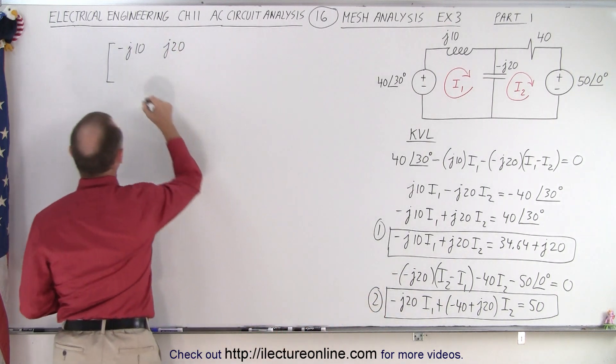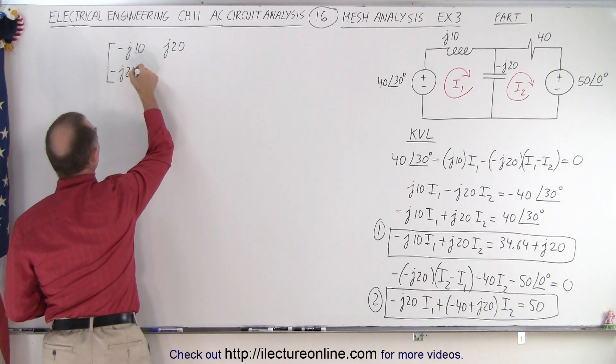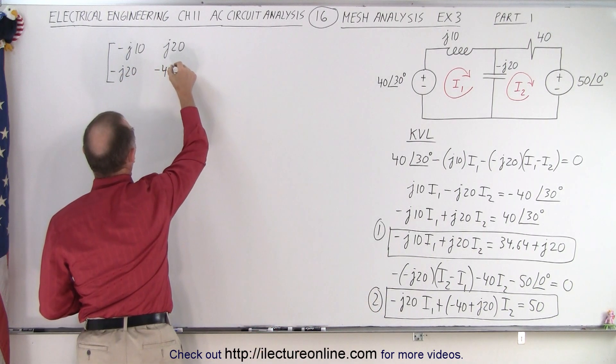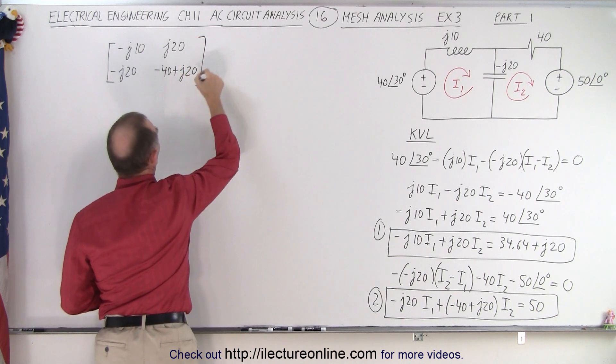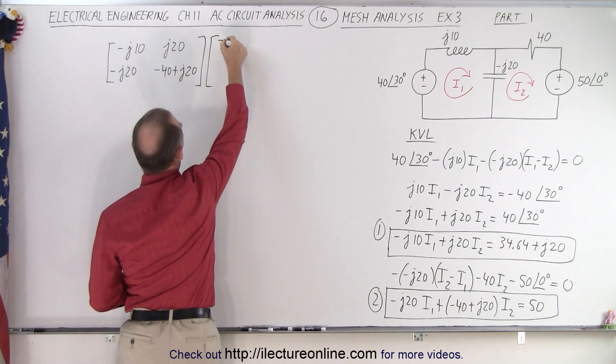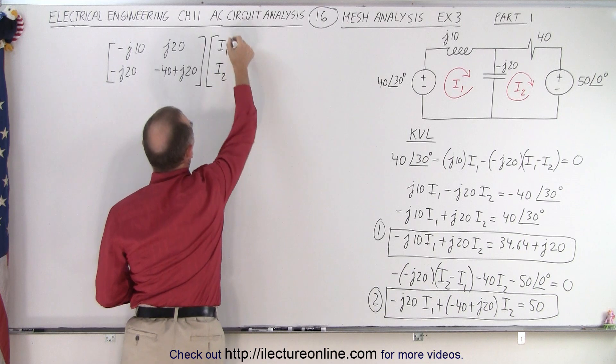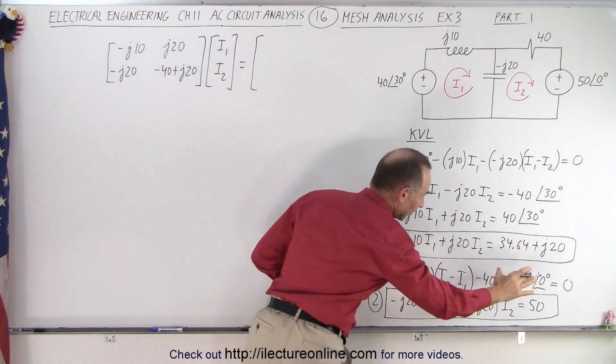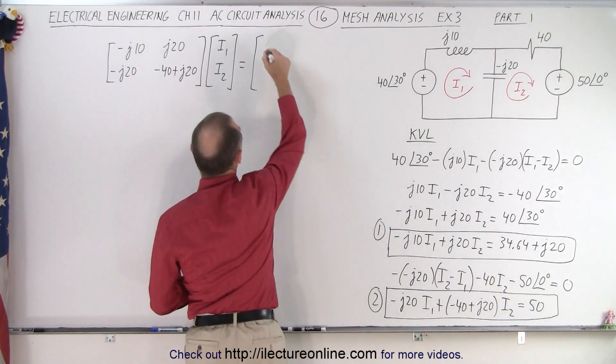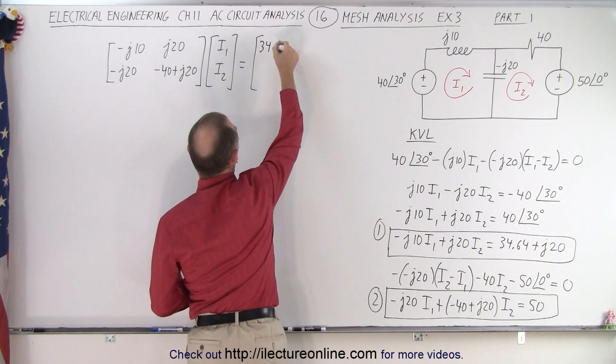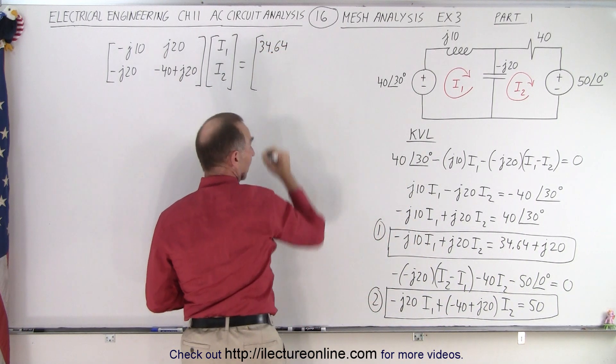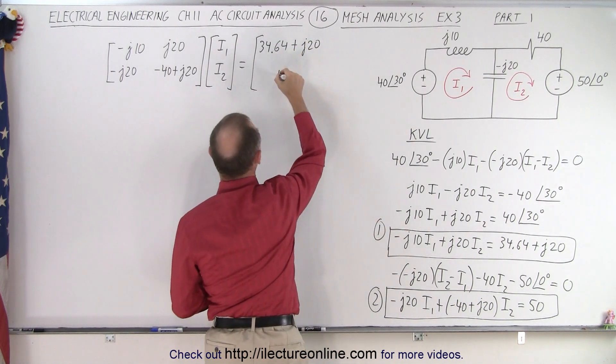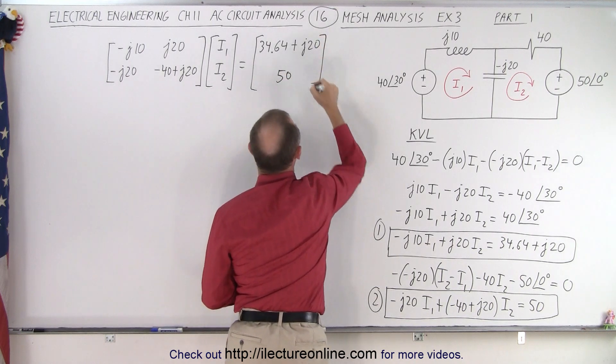And then here we get a minus J20 and a minus 40 plus J20. Multiply that times the I matrix, I1 and I2, the two currents. And that should equal the two constants on the right side. So here we have 34.64 plus J20. And over here we have a plus 50.